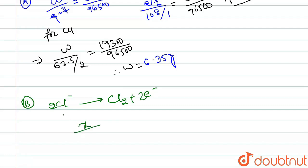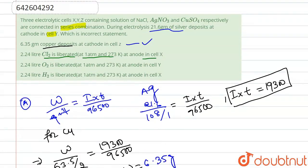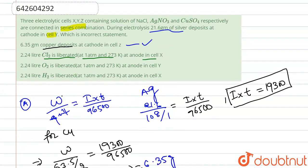For this we will again apply the same Faraday's law. This will be x upon 22.4 upon 2, which is equals to 19300 divided by 2 because two is its n factor, upon 96500. If we solve this, we have value of x equals to 2.24 liter. So 2.24 liter of Cl2 is liberated, so our option B is also correct.